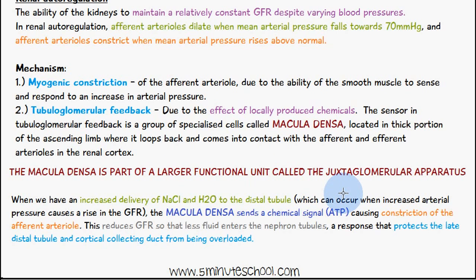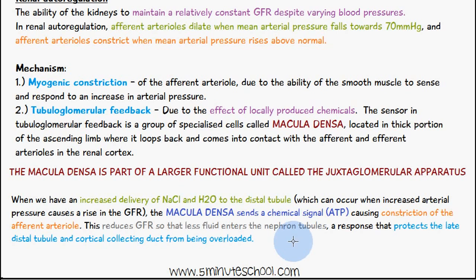The macula densa is part of a larger functional unit called the juxtaglomerular apparatus. When there is increased delivery of sodium chloride and water to the distal tubule — which can occur with increased arterial pressures and a rise in glomerular filtration rate — the macula densa sends a chemical signal in the form of ATP, causing constriction of the afferent arteriole. This reduces the glomerular filtration rate so that less fluid enters the nephron tubules, protecting the late distal tubule and cortical collecting duct from being overloaded.